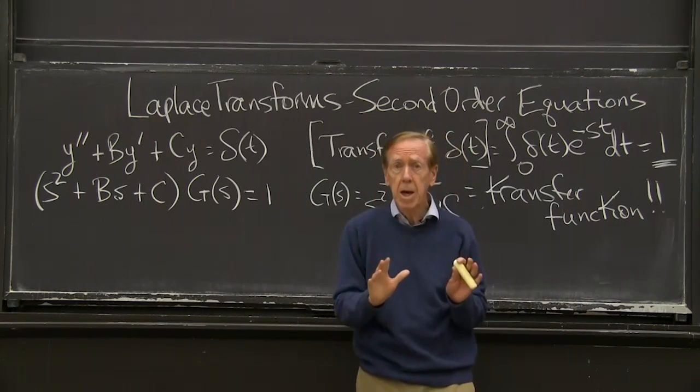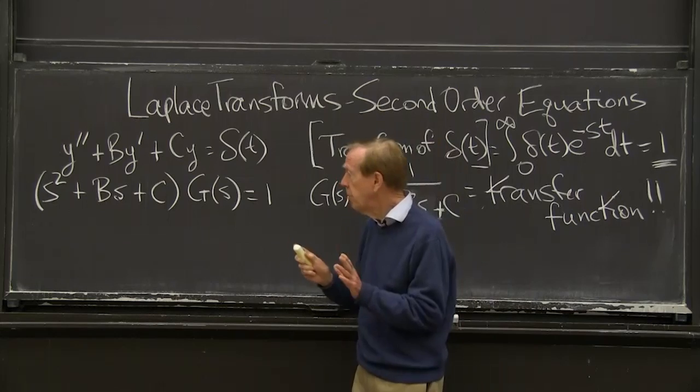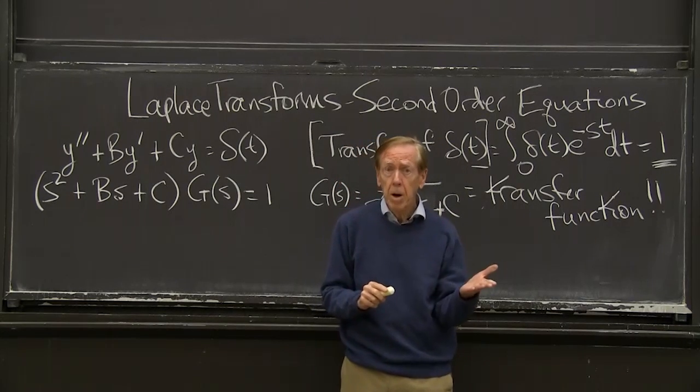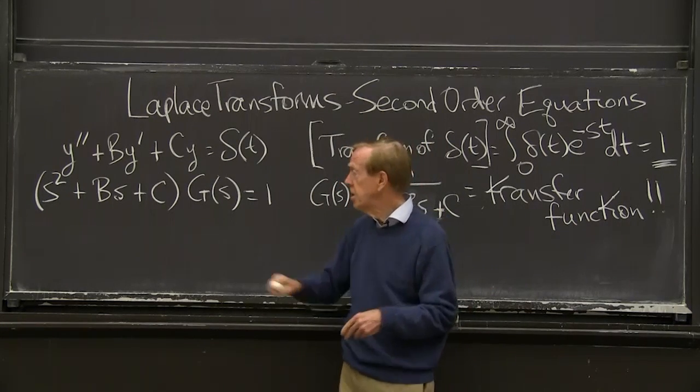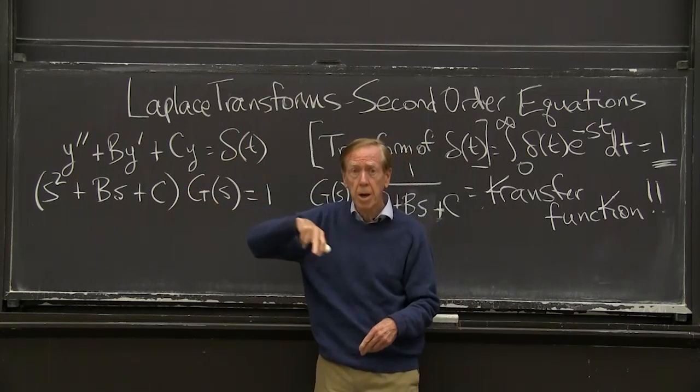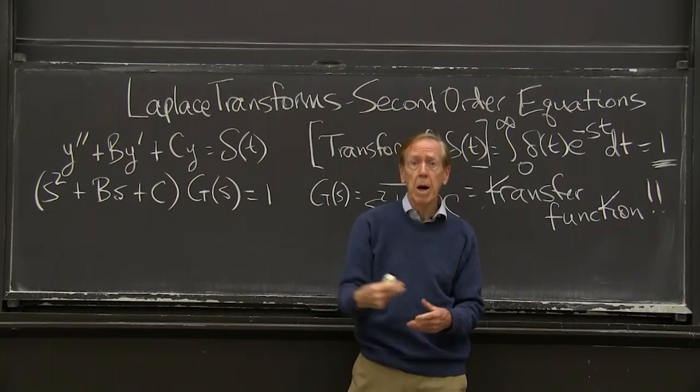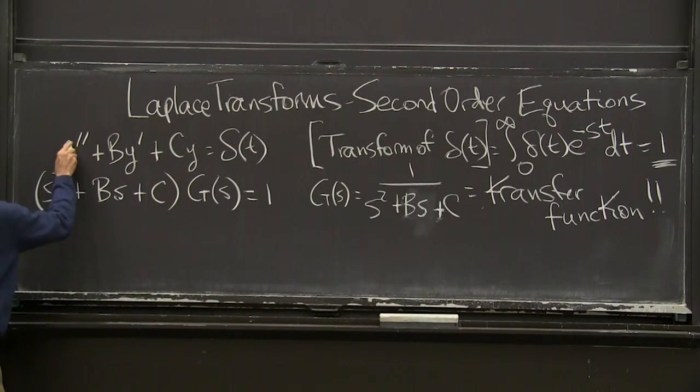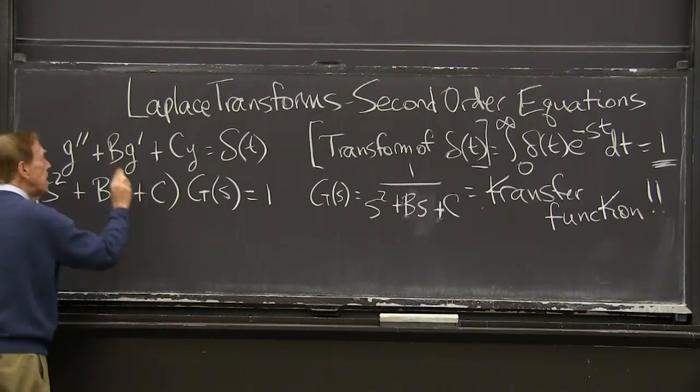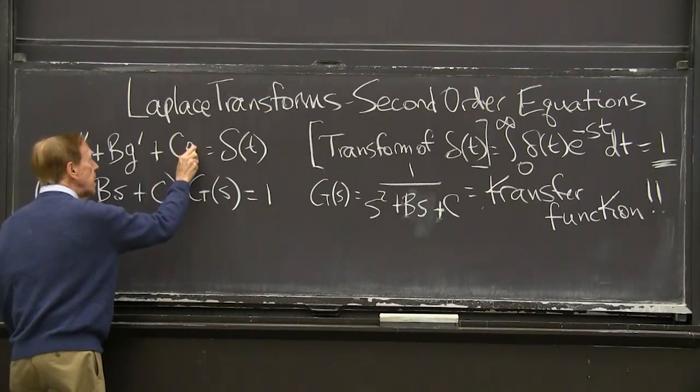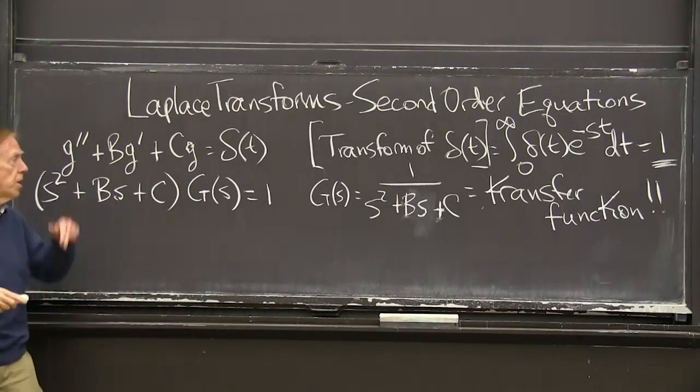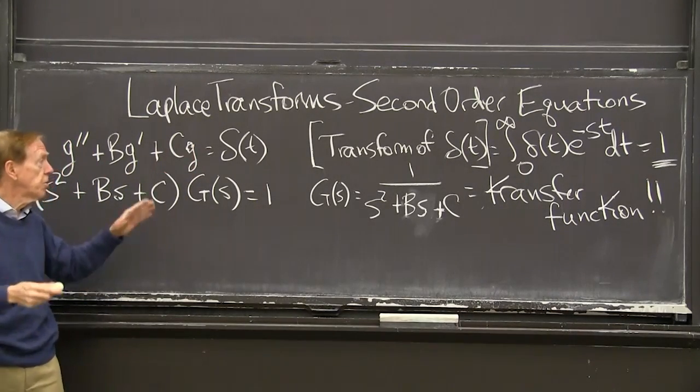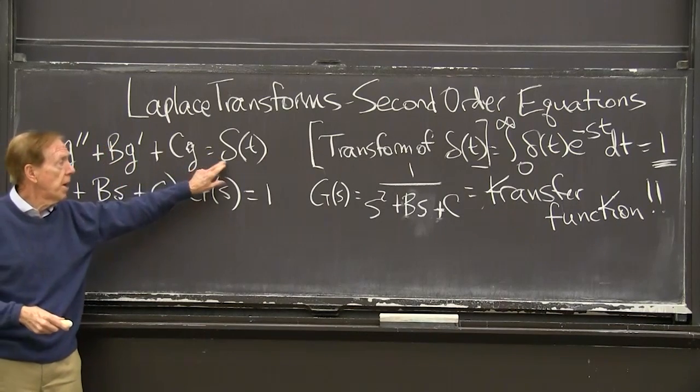You remember that's a key example. And actually, we have a special letter for the solution. This is an impulse, and the solution is the impulse response. I use a little g, so I should have turned this y into a g. So that g is the solution starting from zero initial conditions with that delta.